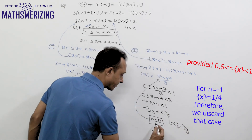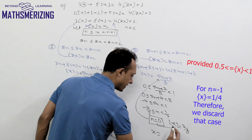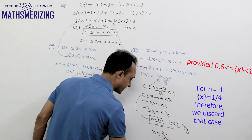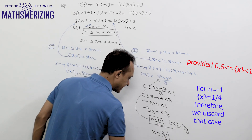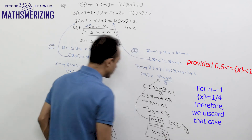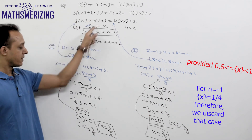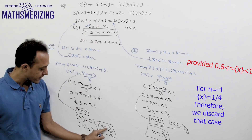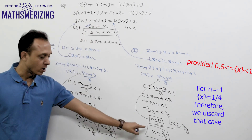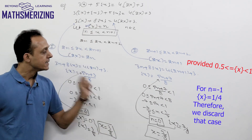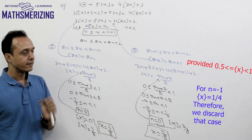Putting n equal to 0, the fractional part of x is 7 over 8. Since x equals its integer part plus its fractional part, in this case x equals 7 over 8. So there are two solutions to this equation: either the value of x is 3 over 8, or the value of x is 7 over 8.